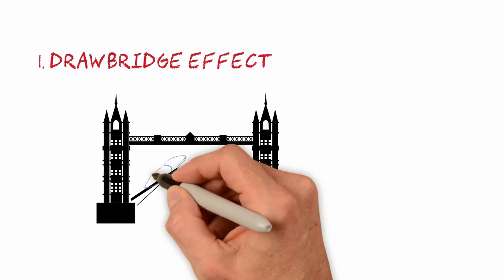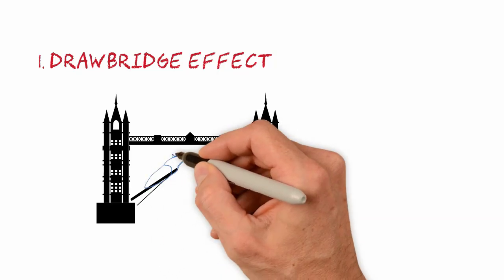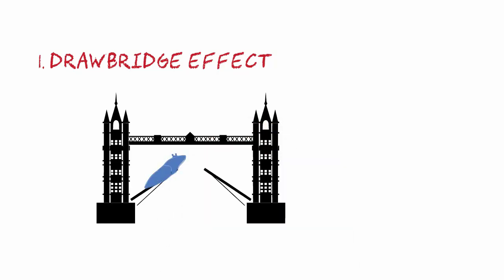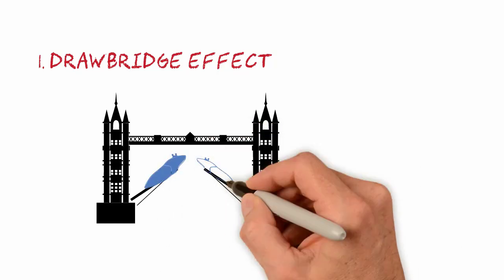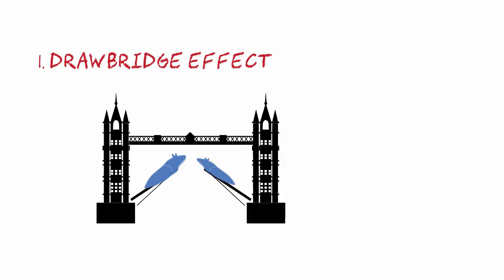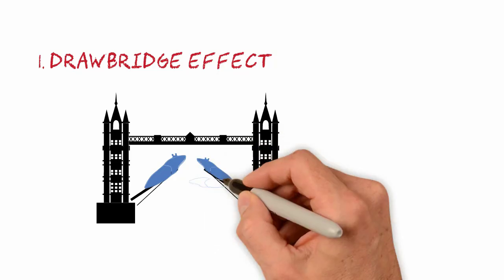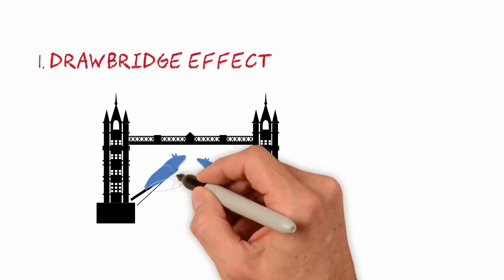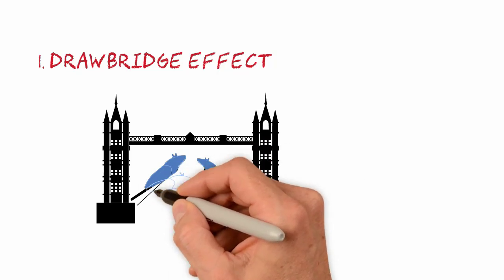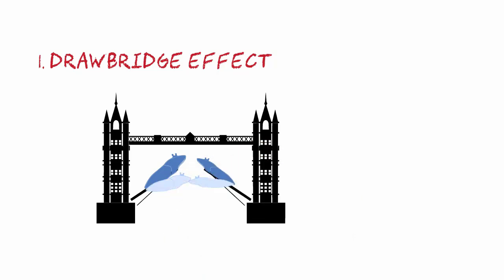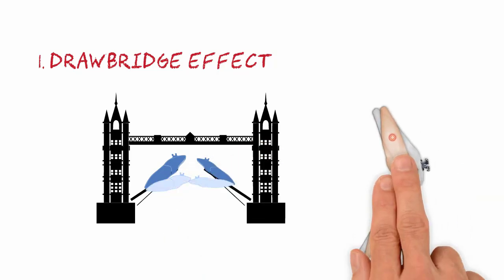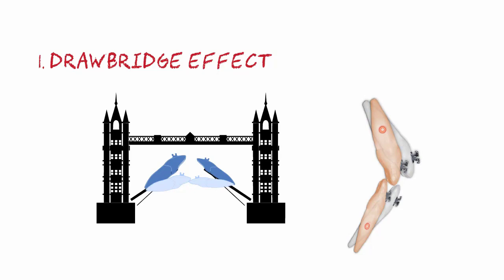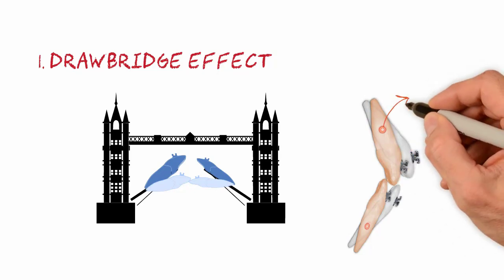The first analogy is the drawbridge effect. When comparing the incisors with two movable bridges, the descent of the bridges would be comparable to the retraction of the crowns, which causes their uprighting and relative extrusion. This occurs by rotating the tooth around its center of resistance.